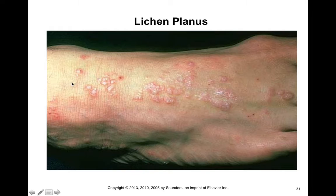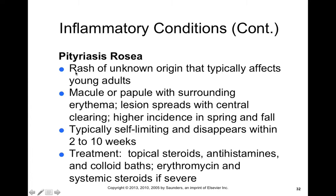Pityriasis rosea is a rash of unknown origin. It typically affects younger adults, and we find macules and papules with surrounding erythema — lesions spread with central clearing. The rash kind of looks like ringworm; however, it's more widespread than tinea. There's a higher incidence in the spring and fall. It is typically self-limiting within two to ten weeks. It's treated with topical steroids and antihistamines, colloidal baths, and erythromycin and steroids if it's severe.